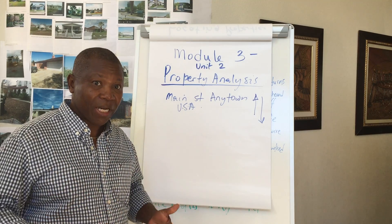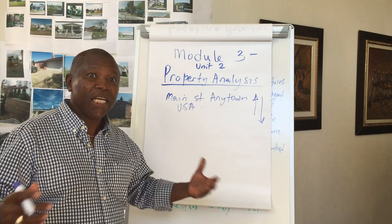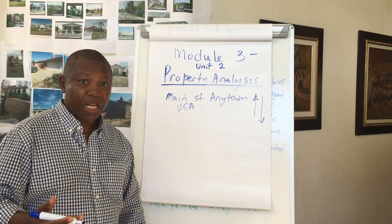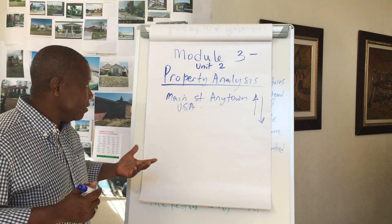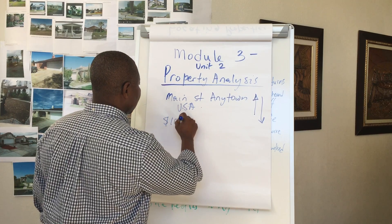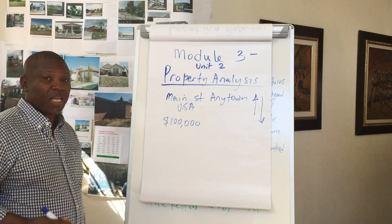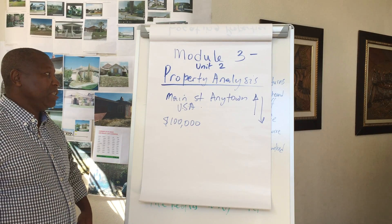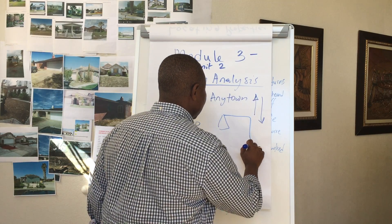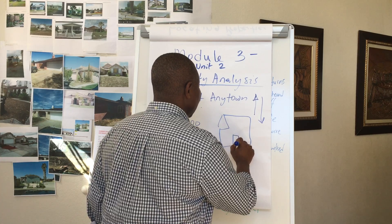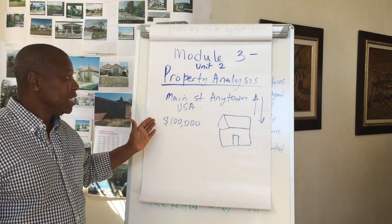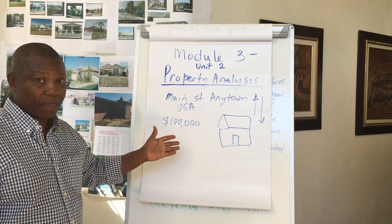What somebody will offer for a property depends on how much need they have for the property. I could come to any town, USA, and overpay for a property if I'm not an investor. Let's say the market in any town, USA on that street is $100,000. I show up with too much money in my pocket, I saw this nice property, and because I got so much money, I can come in and upset the value of this area.